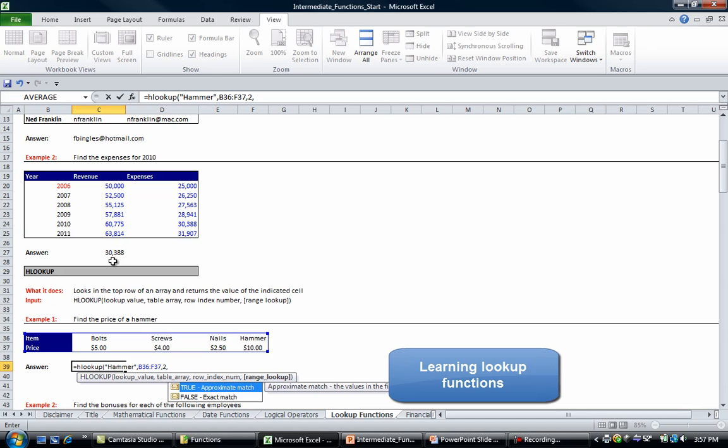2 comma, and we want FALSE so we want an exact match. Let's push enter and we should get $10.